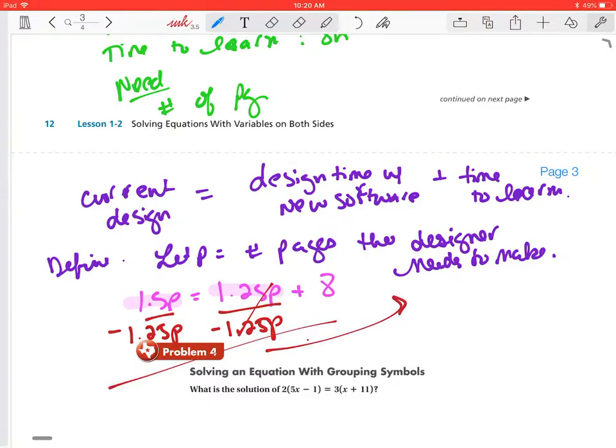1.5 minus 1.25 leaves me with 0.25P equals eight. Now I'm going to divide both sides by 0.25, which gives P equals 32.